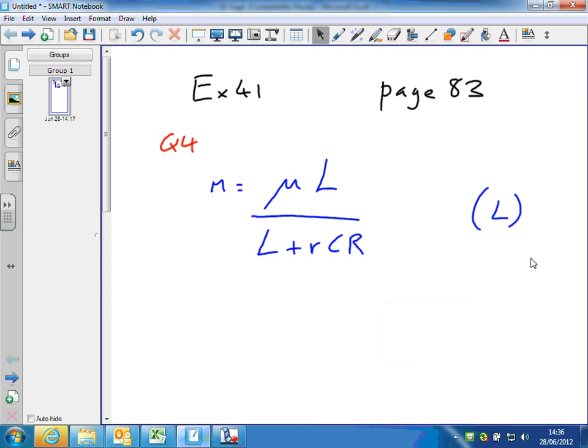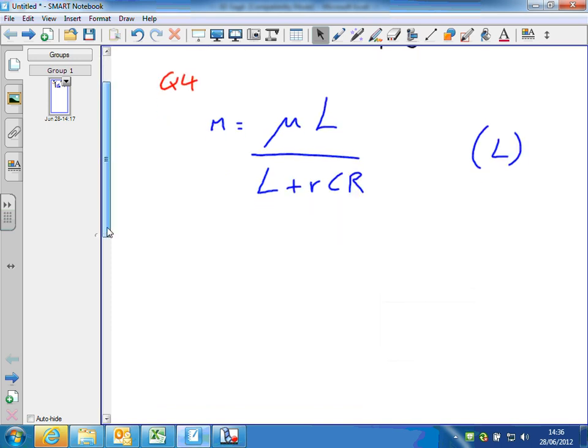Exercise 41, question 4. The formula reads: little m equals mu, this symbol here, Greek letter mu, mu L over L plus r C R. And I have to rearrange for L.